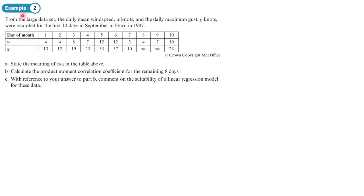So let's have a look. So this question is about the large data set. And it says from the large data set, the daily mean wind speed, W knots, and the daily maximum gusts, G knots were recorded for the first 10 days in September in Hearn in 1987. So this row of the table here, that's the daily mean wind speed. And the bottom row of the table here is the daily maximum gusts. And these units, they're both in knots.